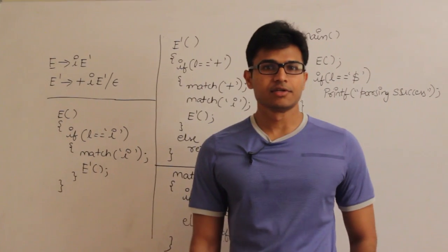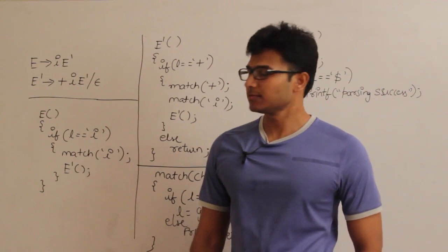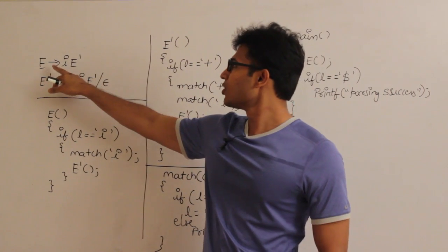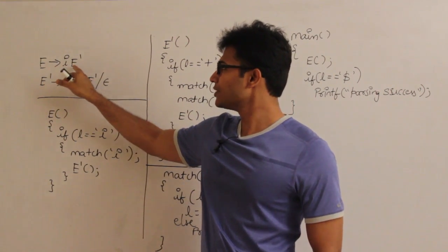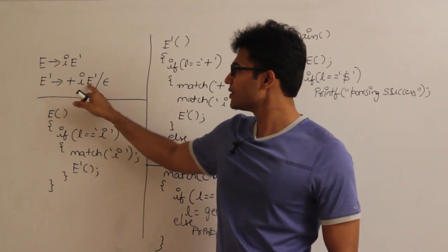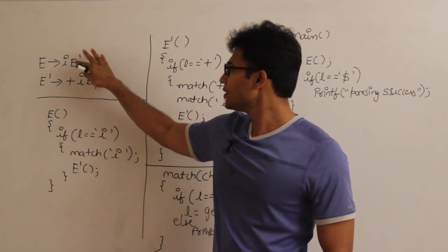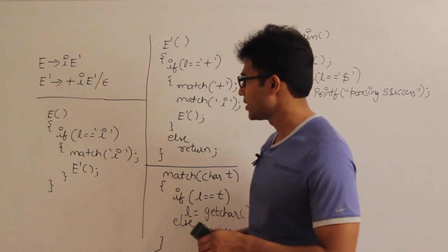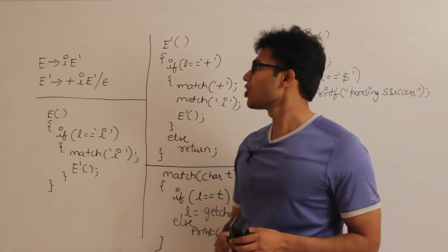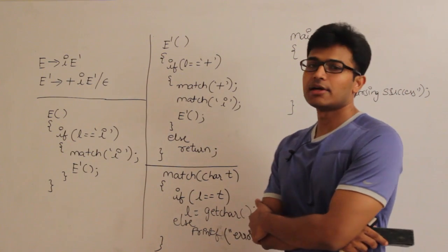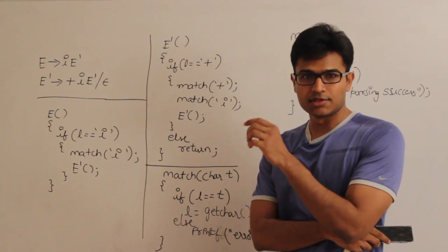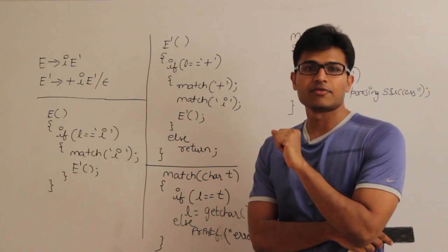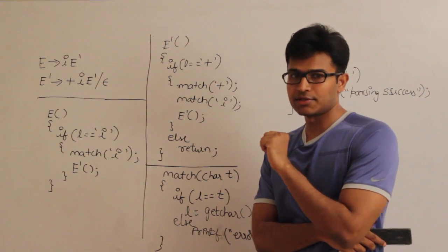Now let's talk about recursive descent parser. I have taken a small grammar with only three productions: E derives IE dash, E dash derives plus IE dash, or epsilon. Just for the sake of simplicity I have taken a small grammar. Recursive descent is one of the top down parsers.